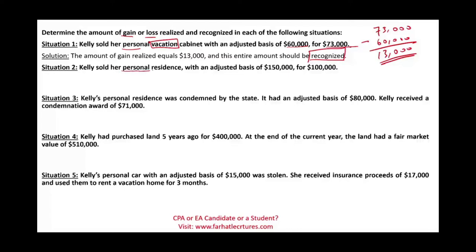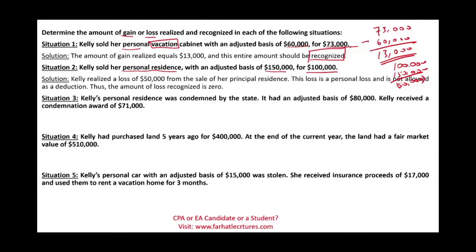Kelly sold her personal residence with an adjusted basis of $150,000 for $100,000 — perhaps during the financial crisis. The amount realized is $100,000, the basis is $150,000, so Kelly incurs a realized loss of $50,000. Is this loss recognized? No. A personal residence is a personal use asset; therefore the loss is not recognized. The recognized amount is zero, even though the realized loss is $50,000.